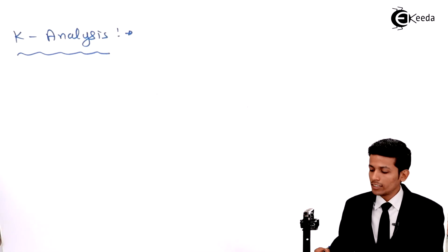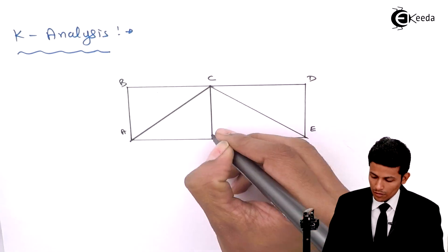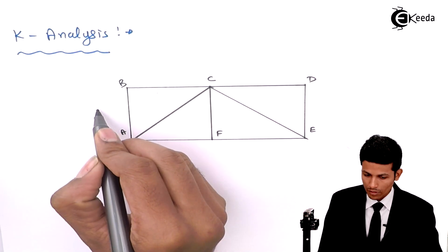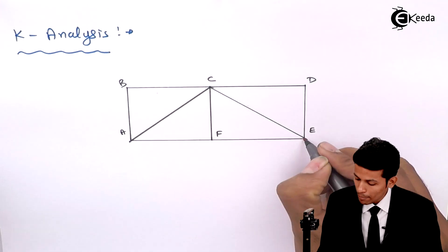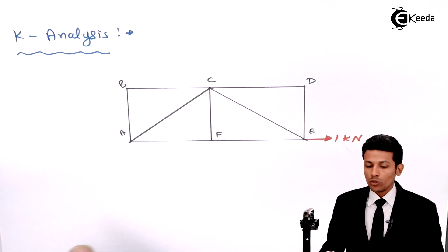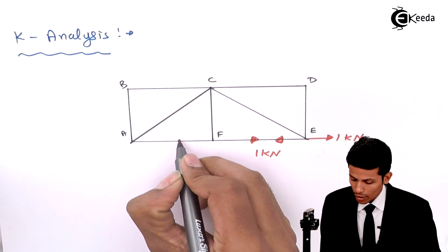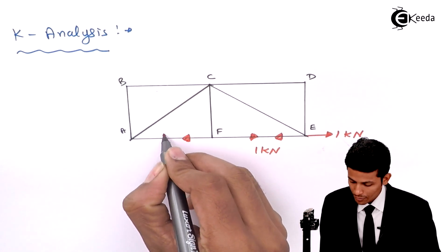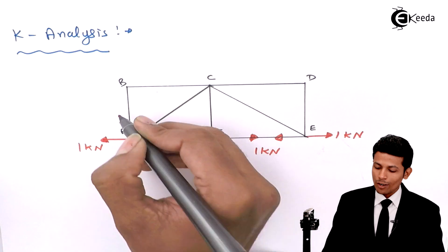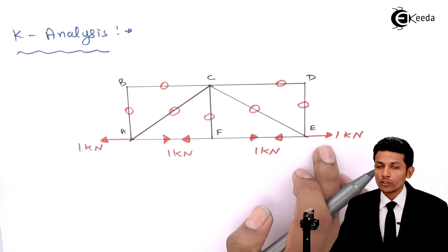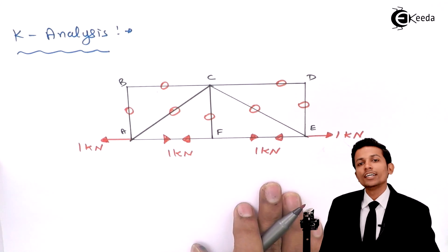Now the K-analysis: since we removed HE, we apply 1 kN unit load at E in the horizontal direction. This 1 kN is balanced by 1 kN at A in the horizontal direction. The rest of the member forces in the K-analysis are zero, as there is no other applied force. Only two members carry values of 1 kN each.